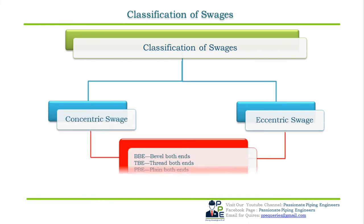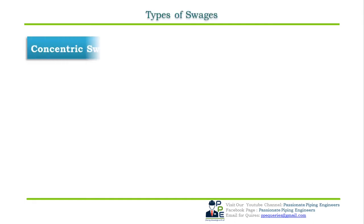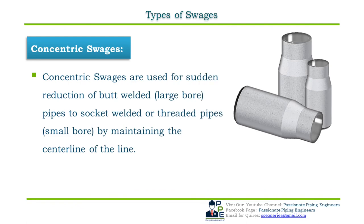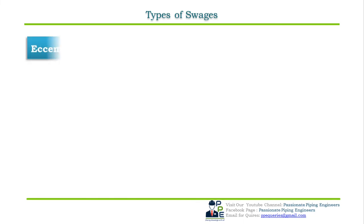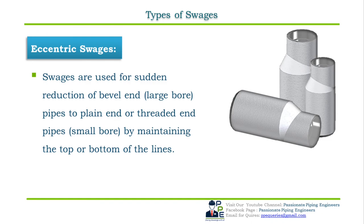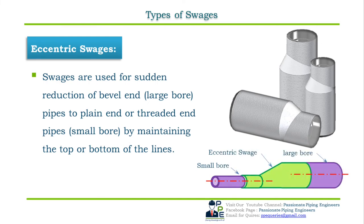Similar to reducers, swedges are available in concentric and eccentric shapes, further divided by end preparations. Concentric swedges are used for sudden reduction of butt welded (large bore) pipes to socket welded or threaded (small bore) pipes while maintaining the centerline of the two connecting pipes, as shown in the figure. Eccentric swedges perform the same reduction but maintain the top or bottom of the two connecting lines.